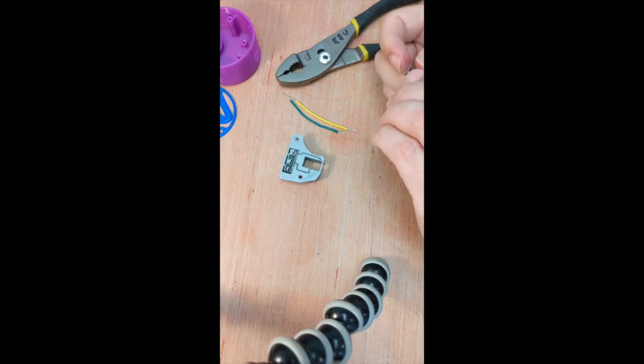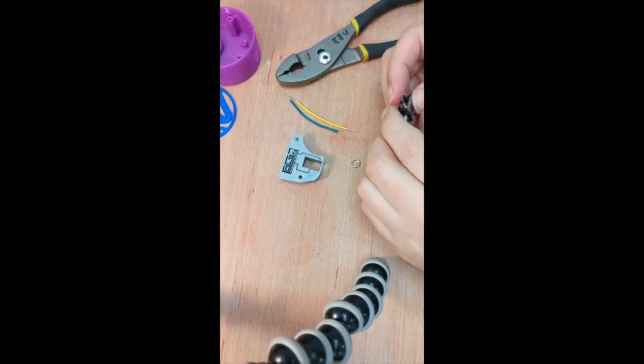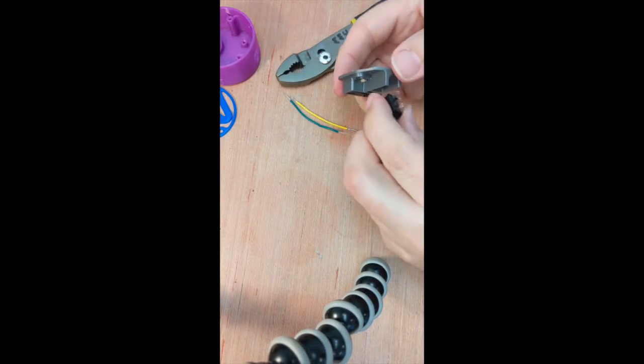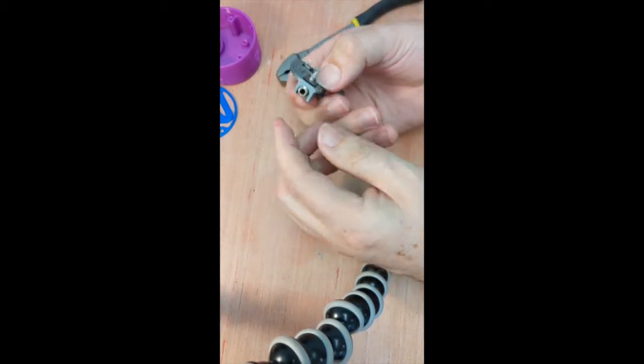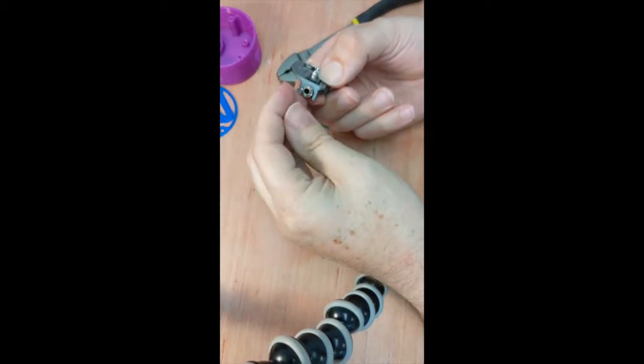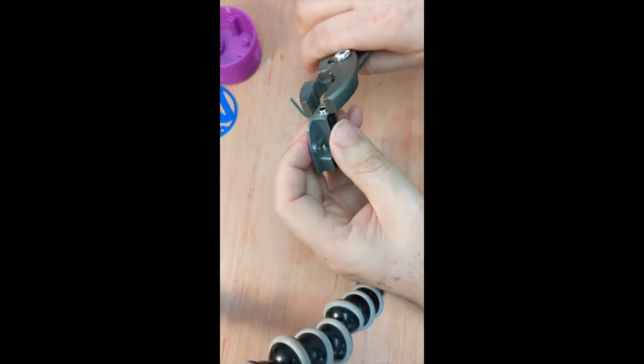Next, remove the ring from the mono jack. Insert the mono jack into the 3D printed holder. Once it slides in place, twist the ring back and tighten it in place with your fingers or pliers.